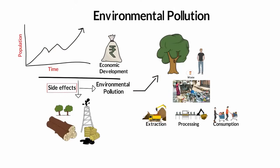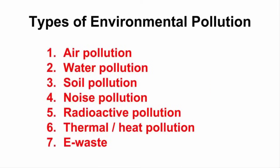Now we will see what are the different types of pollution. Environmental pollution occurs in different forms like air, water, soil, radioactive, noise, heat, thermal, and e-waste. Let's quickly get to know each one of them.